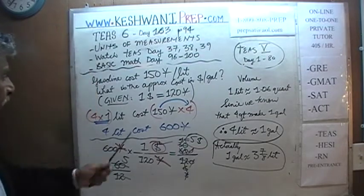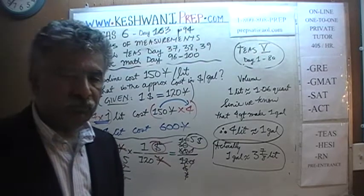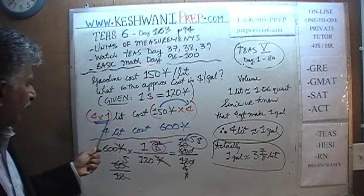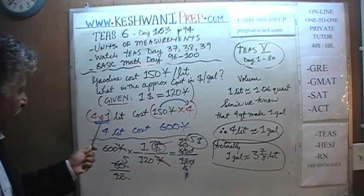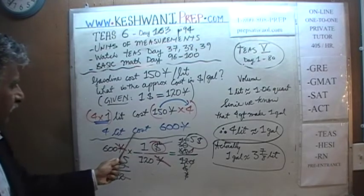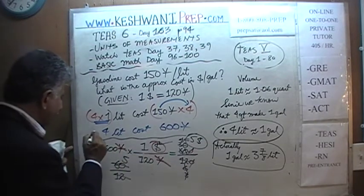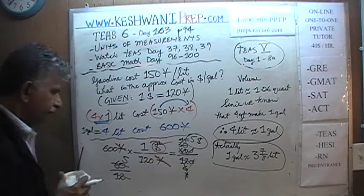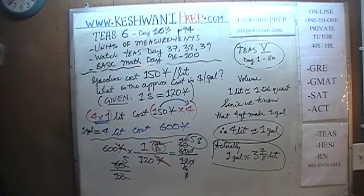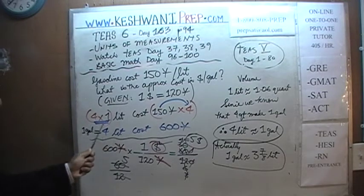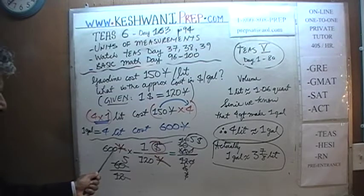So that was one way of doing it — a two-step approach. First we converted liters into gallons: one liter costs 150 yen, therefore four liters costs 600 yen, and four liters is approximately one gallon, so one gallon costs 600 yen. Then we figured out that 600 yen equals five dollars. The answer is gasoline costs five dollars per gallon. Another way to do this problem is to do everything in one step instead of two steps.